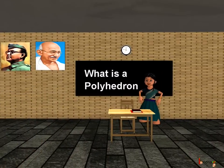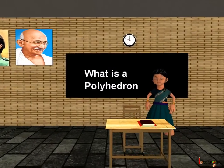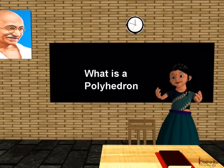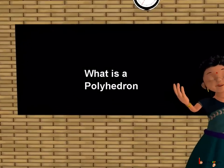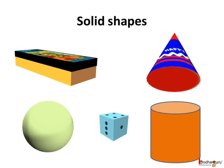Good morning children. Today we shall learn what is a polyhedron. But first, what are solids? The pencil box, the ball, the birthday cap, dice, and the dustbin all are solid shapes.